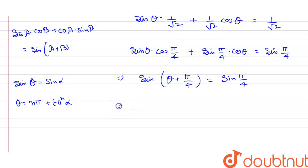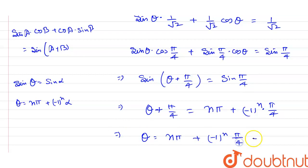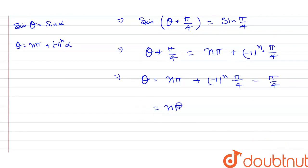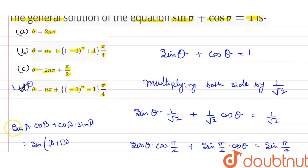Similarly, applying the general solution: theta plus pi by 4 equals n pi plus minus 1 power n into pi by 4. Therefore theta equals n pi plus minus 1 power n into pi by 4 minus pi by 4. That means the correct option is number D.